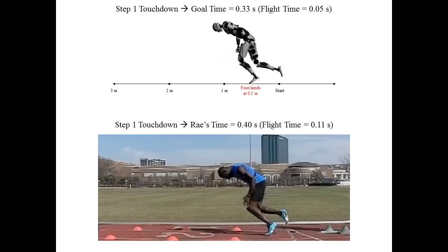Next, we will look at step one touchdown. Ray's flight time after block clearance was 0.11 seconds, which is longer than the gold medal model. This is an area where his start can get faster. If Ray can direct his forces more horizontally and have a lower recovery, he will improve this step in the race. Additionally, Ray's right foot could be closer to the ground, similar to the Jamaican toe drag technique. One good thing is that Ray's frontside thigh mechanics are actually better than the model at this point, and this leads to a very short step one ground contact time.